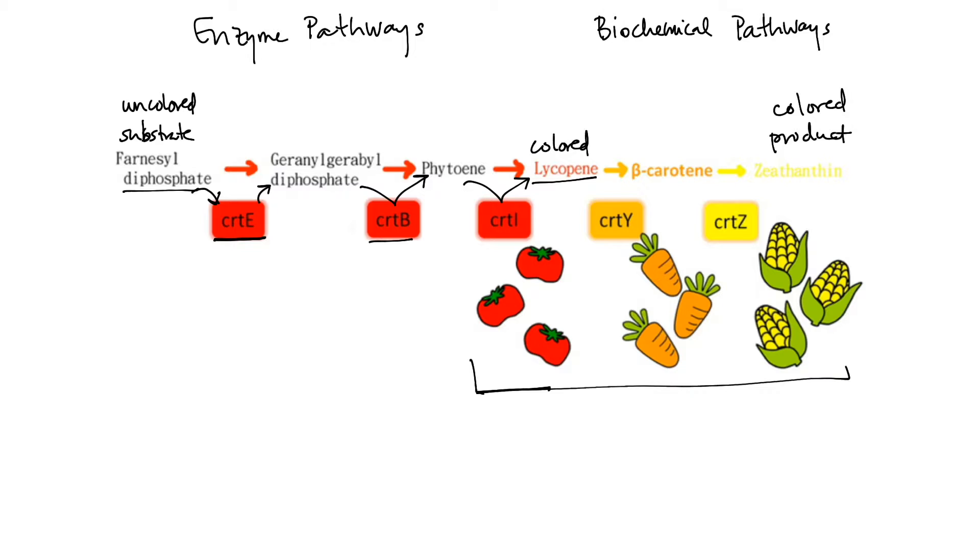Lycopene can be converted into beta-carotene by CRT-Y, and beta-carotene is what colors, for example, carrots or squashes to be an orange color. And then the last step in this pathway could be the conversion of beta-carotene to zeaxanthin by the CRT-Z enzyme. And zeaxanthin, of course, is what gives corn its yellow color. So, you can see that there are five different enzymes whose job it is to help produce this final colored product.